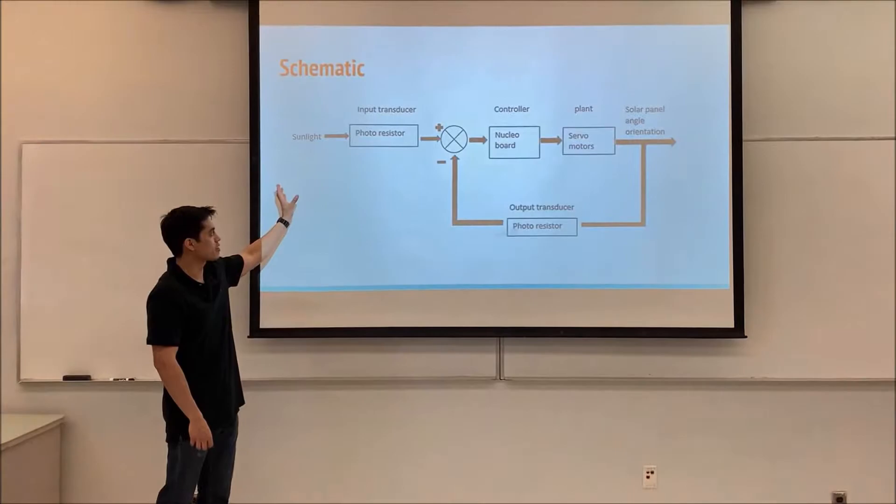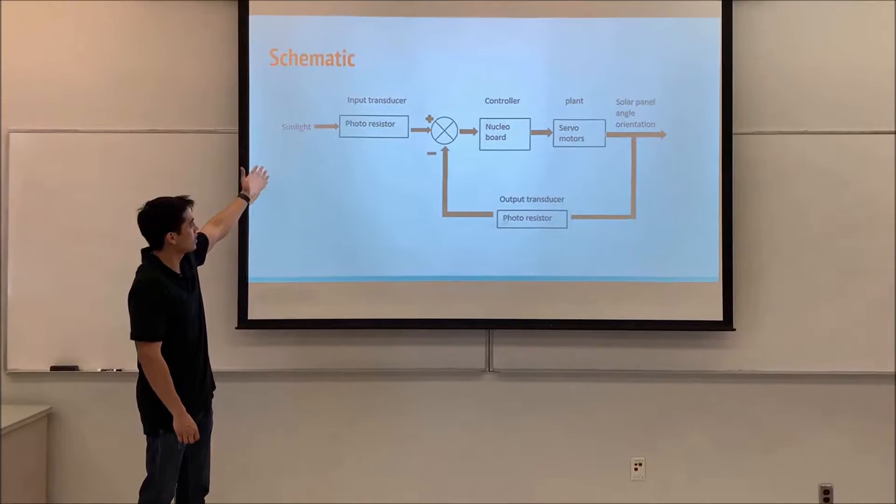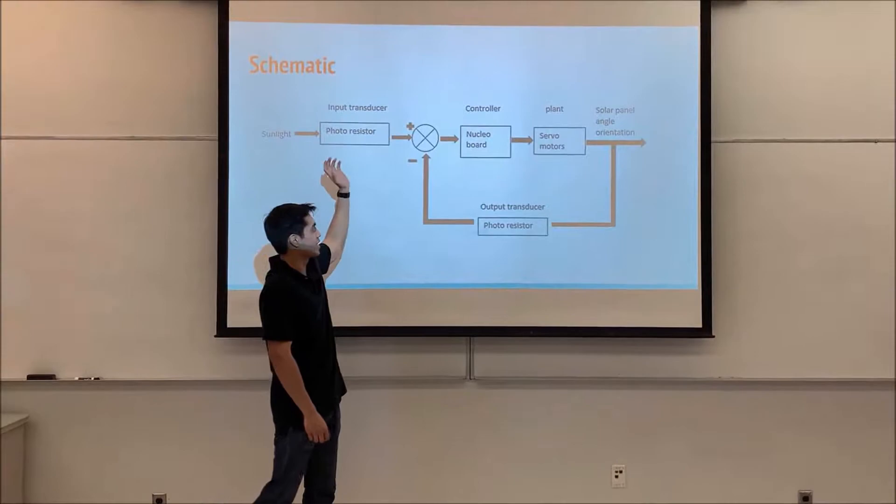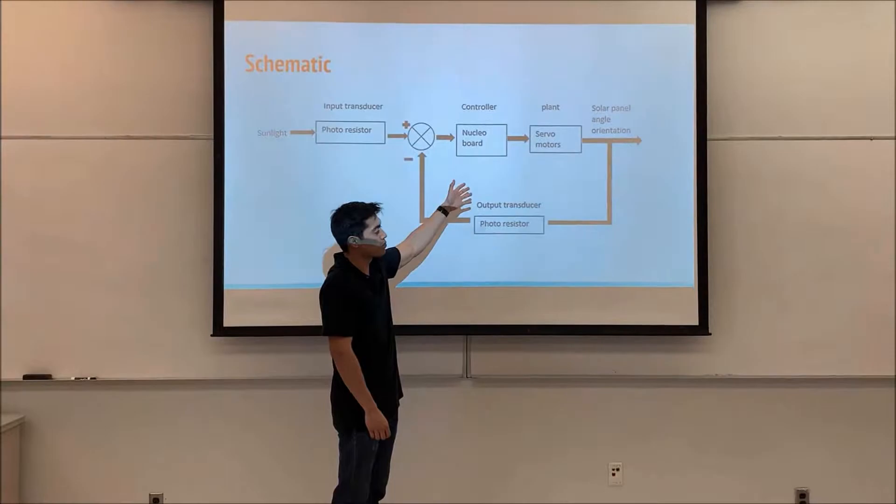So this is the schematic for our project. We pretty much revised our block diagram. The way it's going to work is we're going to have sunlight be our input. And then our transducers, which are going to be the photoresistors, are going to take in the sunlight as the input and convert it to the nucleo board.